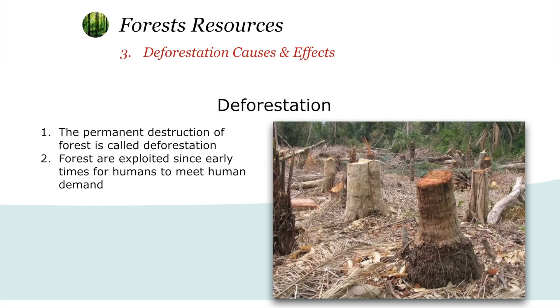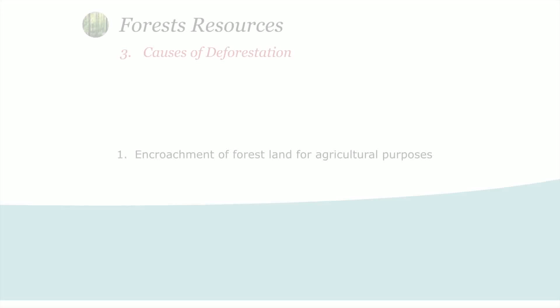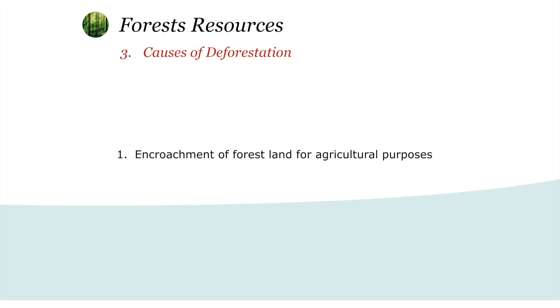Deforestation: causes and its effects. What is deforestation? The permanent destruction of forest is called deforestation. That means once the forest is destroyed, it will not regenerate or regrow. This permanent destruction of forest is called deforestation. Forests have been exploited since early times of humans to meet human demands.